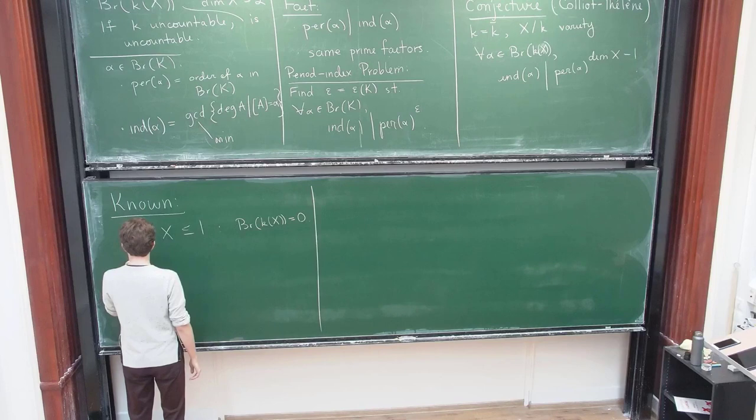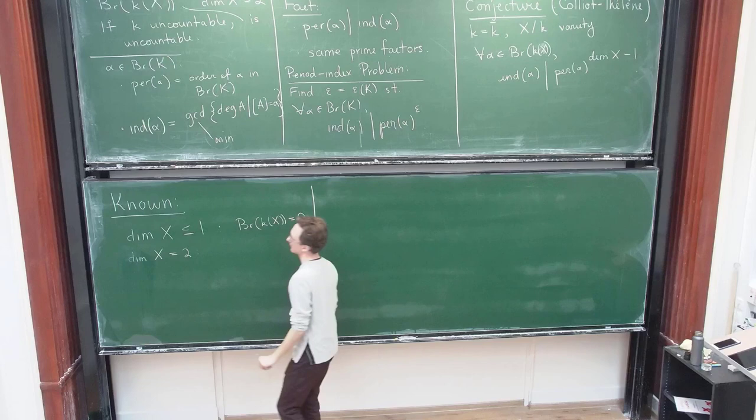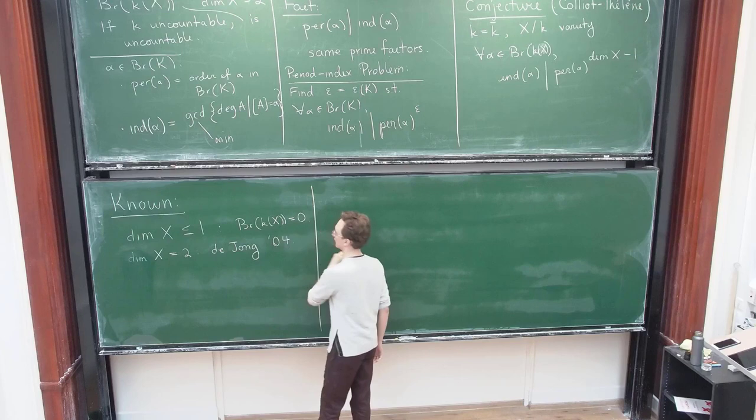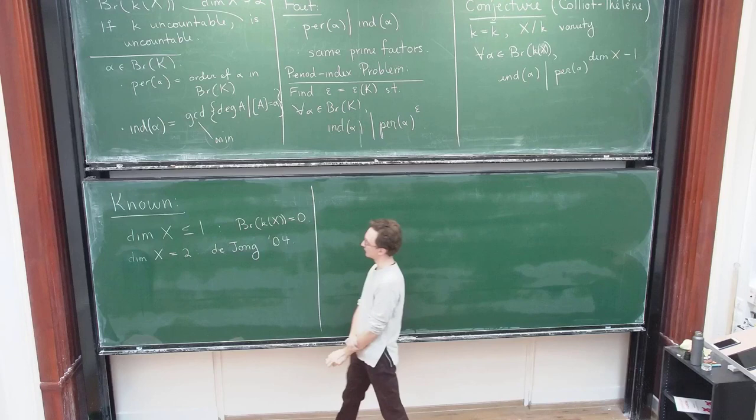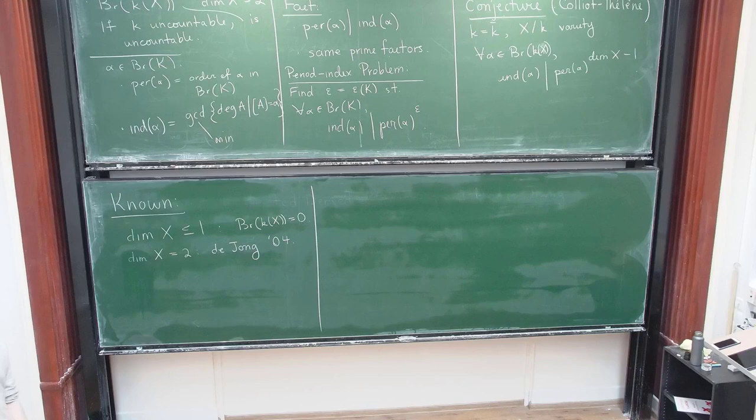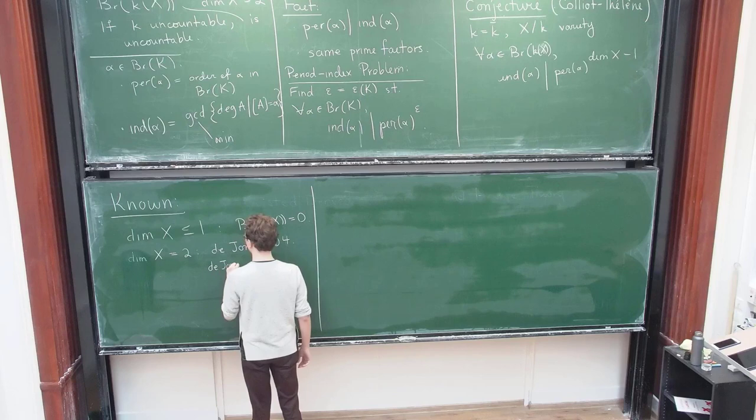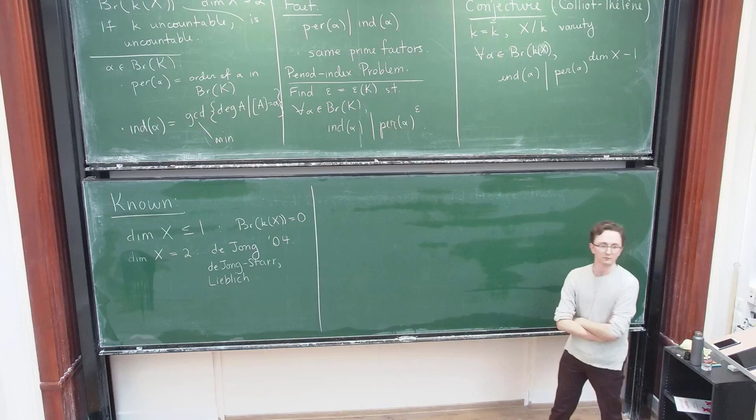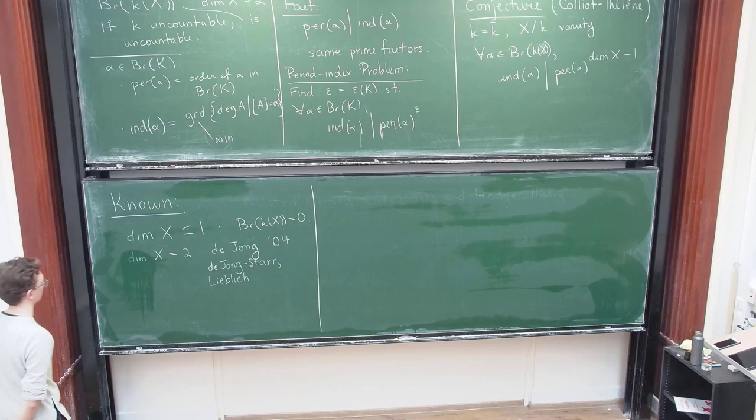So the really interesting thing happens when you have a surface. And in this case, it is known. This is a theorem of de Jong from 2004. It's actually quite a hard theorem. And I should say, actually he didn't, so what de Jong proved is that it holds when the period is prime to the characteristic. And in the general case, there's, you have to use later results of de Jong and Starr and also Lieblich to reduce that sort of from the positive characteristic case to characteristic zero. This is quite a hard result.